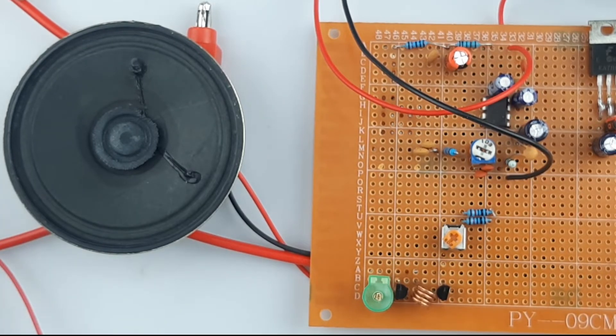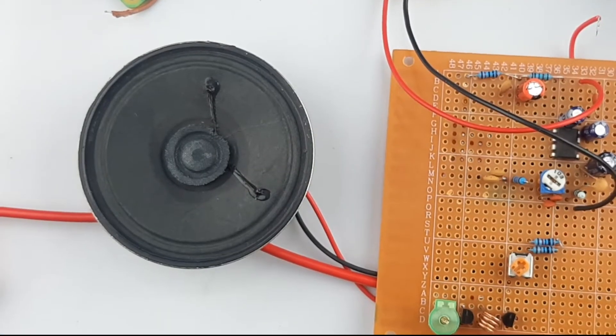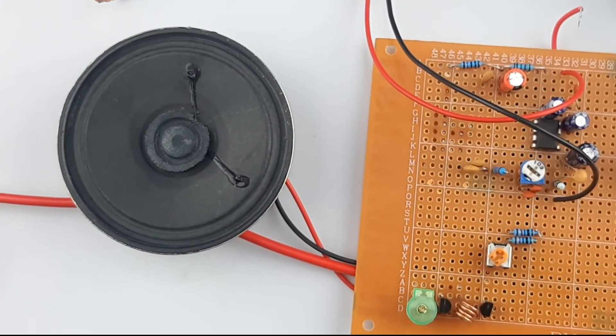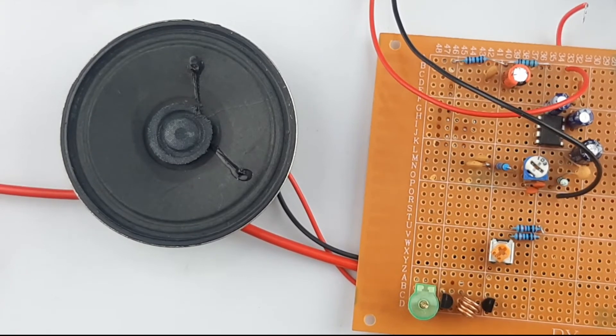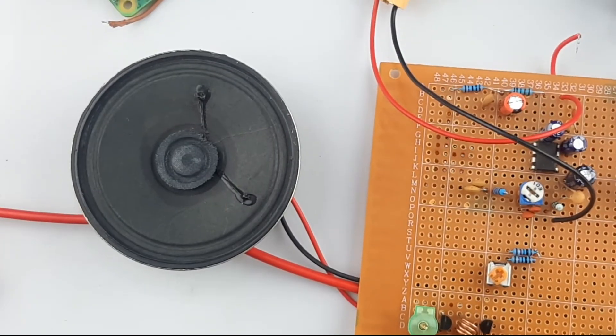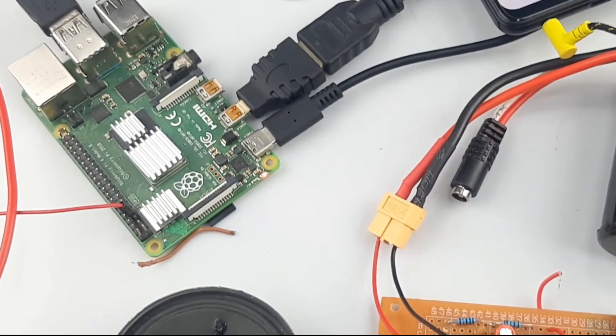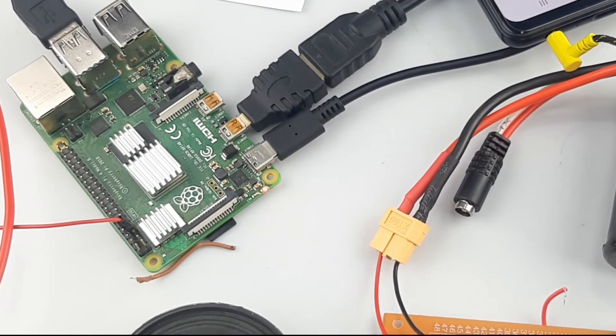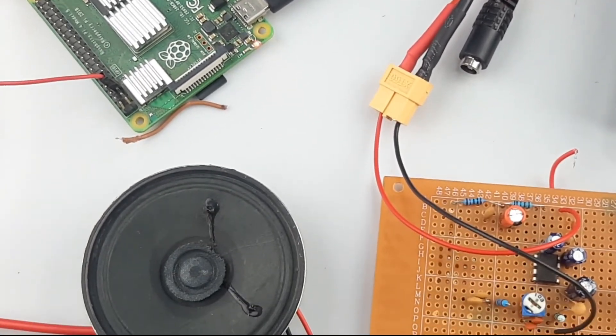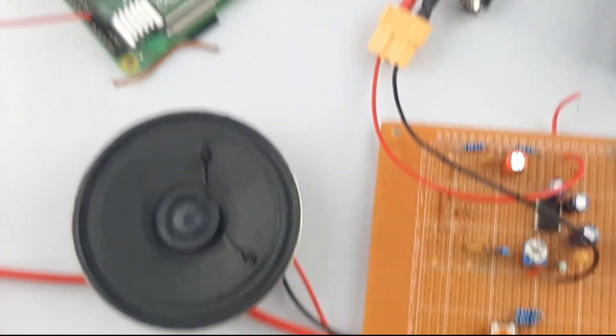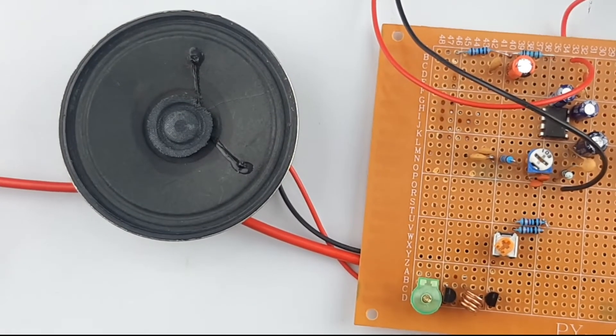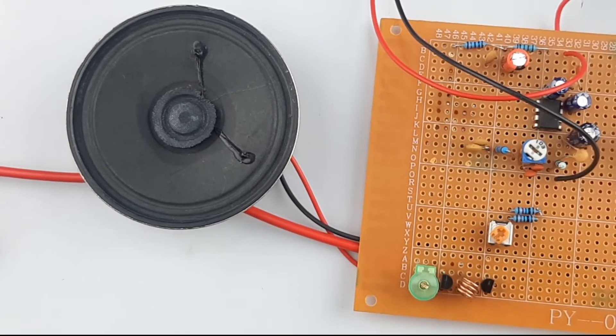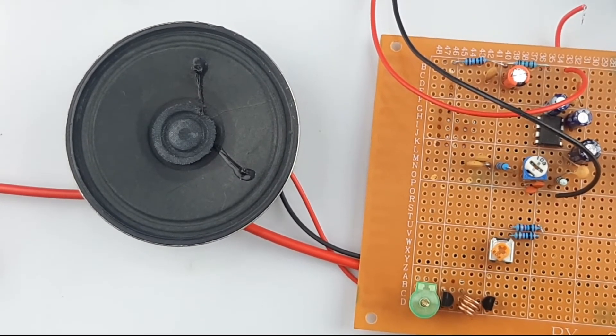As you can see right now, I've enabled the transmitter with the Raspberry Pi right here. This Raspberry Pi is transmitting a signal. Now, as you can see, even after the receiver is just right beside the transmitter, you cannot hear a thing from the receiver circuit.